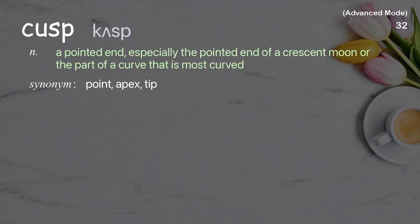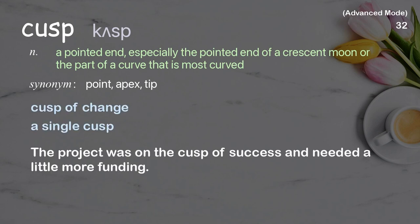Cusp: a pointed end, especially the pointed end of a crescent moon or the part of a curve that is most curved. Examples: cusp of change; a single cusp. Example sentence: The project was on the cusp of success and needed a little more funding.